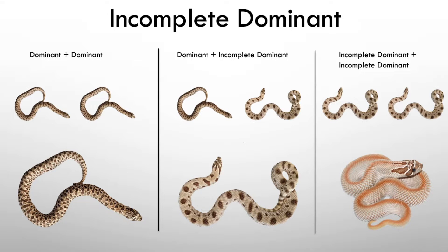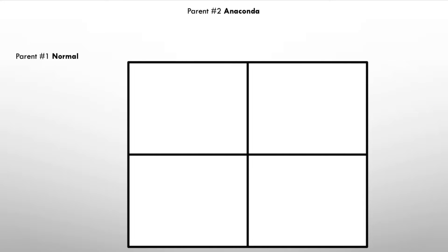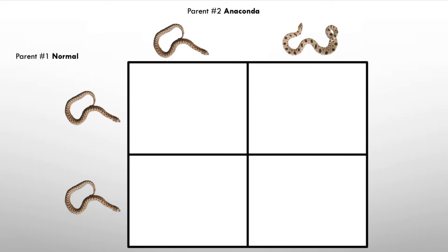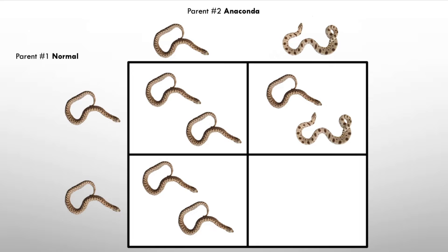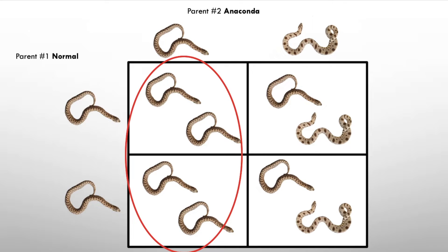Now let's look at the Punnett squares for incomplete dominant. If parent one is a normal with two copies of the normal morph and parent two is a conda with one copy of the anaconda gene, you get: normal, conda, normal, conda. So 50% of the babies will be normal pattern and 50% will have the reduced conda pattern.